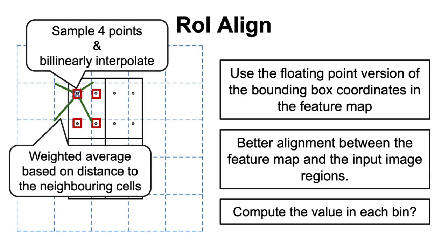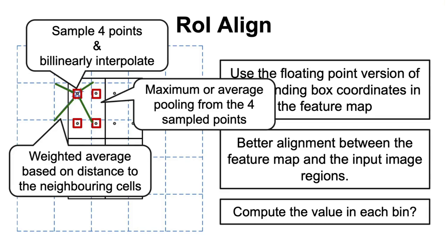If you want to get more into the mathematical operation of the region of interest align, I've added a link in the description to a great article that does just that. In the end, we either take the maximum of those four points or the average, resulting in a fixed-sized output, as in the region of interest pooling.